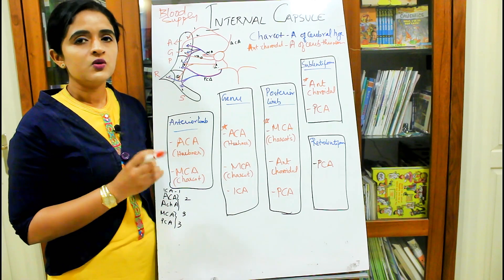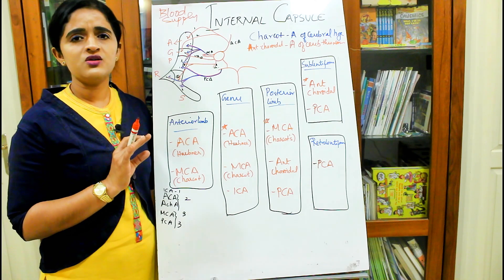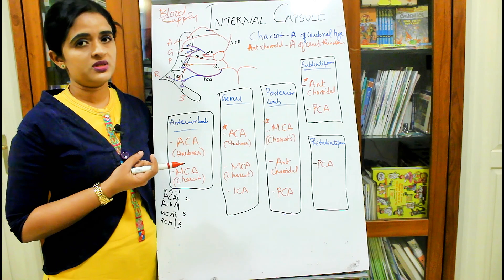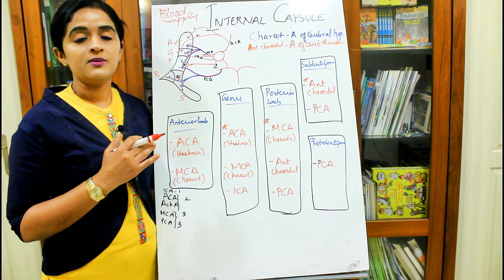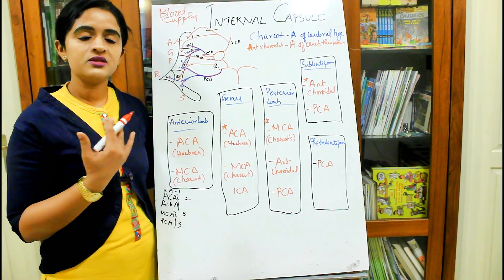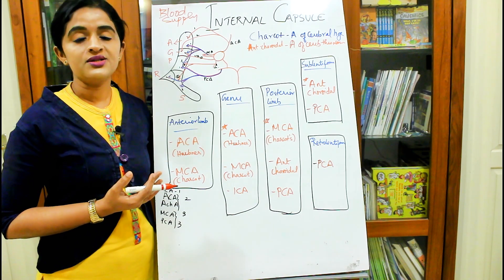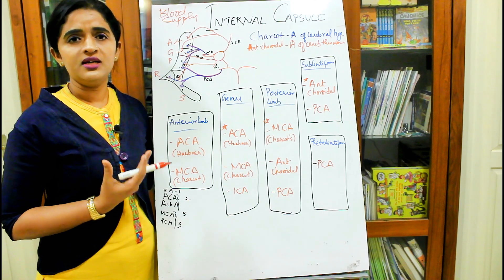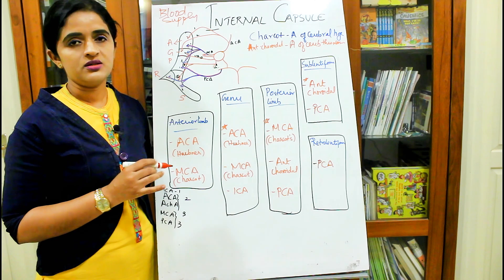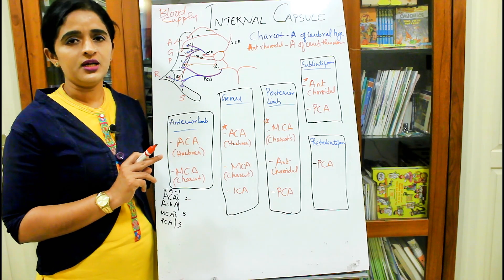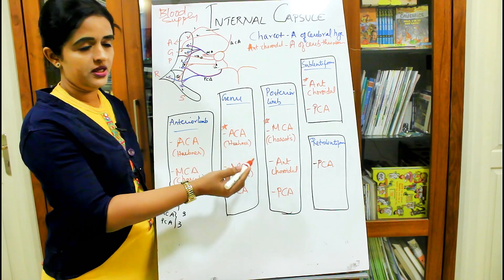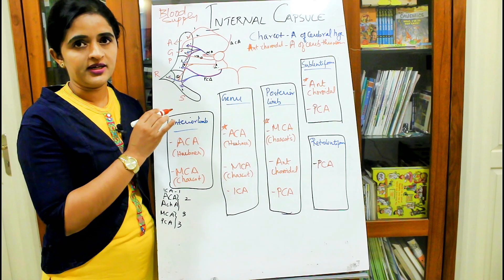Moving on to the blood supply, we need to know some basics — which are the major vessels supplying the internal capsule. There are mainly three cerebral vessels: the anterior cerebral, middle cerebral, and posterior cerebral. The anterior and middle cerebral are branches of the internal carotid, whereas the posterior cerebral artery is a branch of the basilar artery. The internal capsule receives blood supply from all three major vessels — anterior cerebral, middle cerebral, and posterior cerebral — and one more vessel: the anterior choroidal artery.